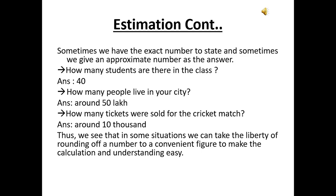Sometimes we have the exact number to state and sometimes we give an approximate number as the answer. Suppose the question is how many students are there in the class - you say 40. How many people live in your city? You will say around 50 lakh, because you don't exactly know. How many tickets were sold for a cricket match? The answer came around 10,000. Thus we see that in some situations we can take the liberty of rounding off a number to a convenient figure to make calculation and understanding easy.